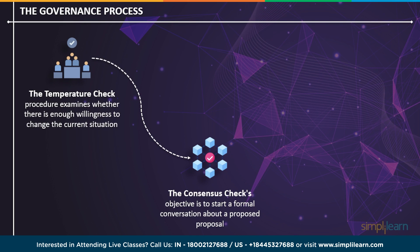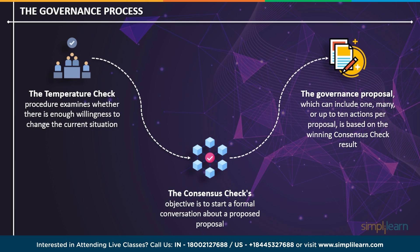The consensus check procedure develops a formal conversation surrounding a proposal and takes into account feedback from the temperature check. Another off-chain vote follows the consensus check, and a majority vote with a 50K UNI yes-vote threshold prevails after five days. Then comes the last step — the governance proposal. The proposal comes with on-chain executable code and should take into account the consensus check suggestions. A delegate must have a minimum balance of 2 million UNI to submit an on-chain governance proposal, and a majority vote with a 40K UNI yes-vote threshold wins after a seven-day voting period.